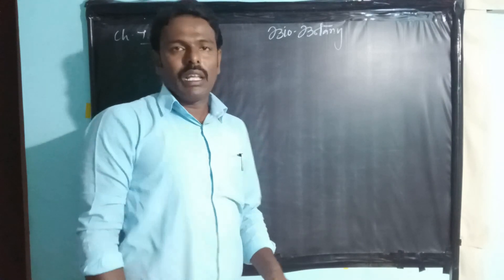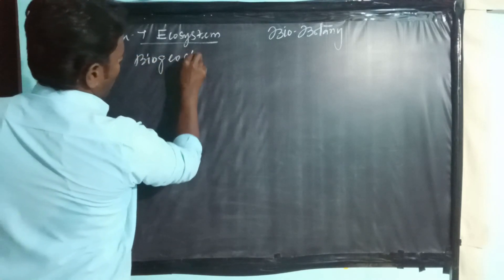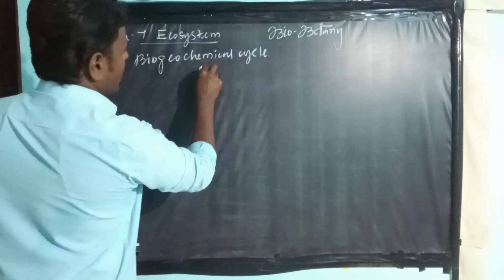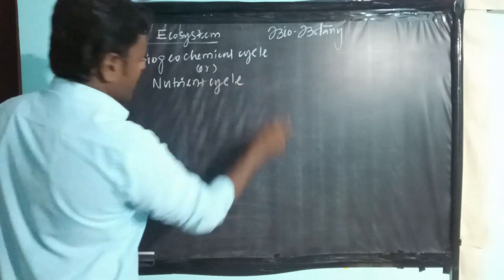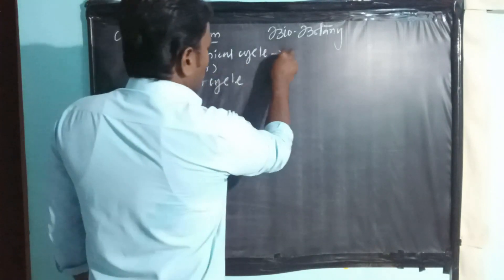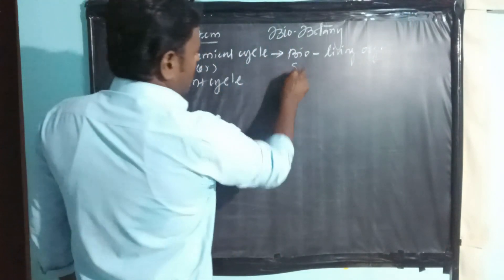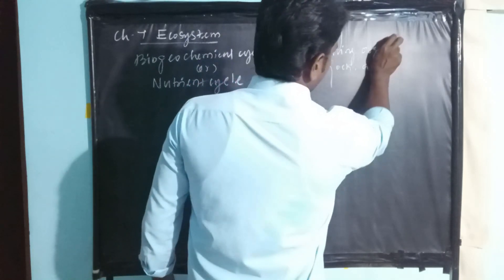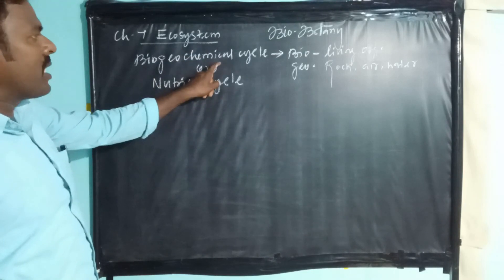Now we are going to learn about the biogeochemical cycle. First of all, what is the meaning of biogeochemical? Bio means living organism, geo means rock and water. That means a biogeochemical cycle.